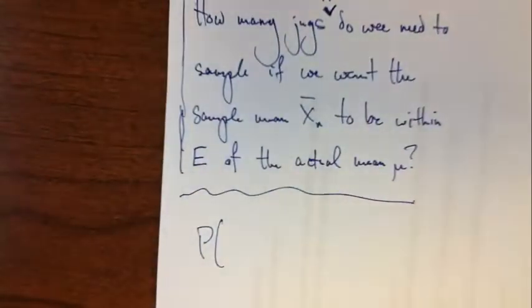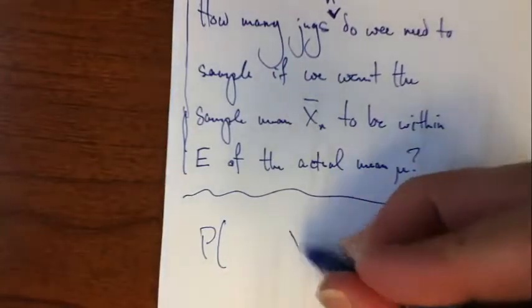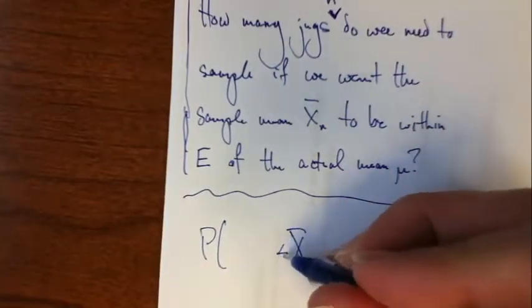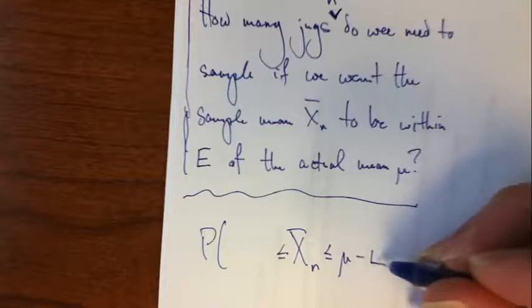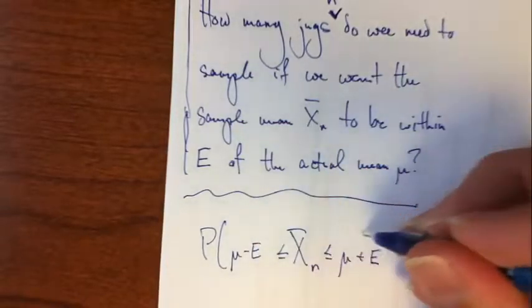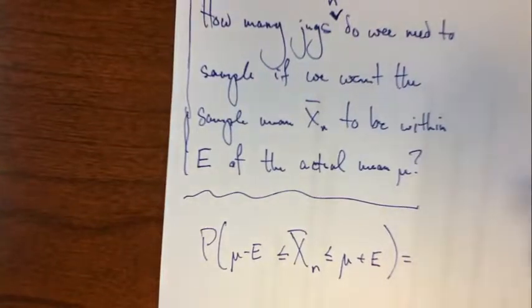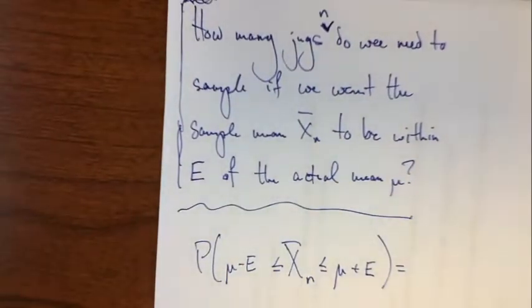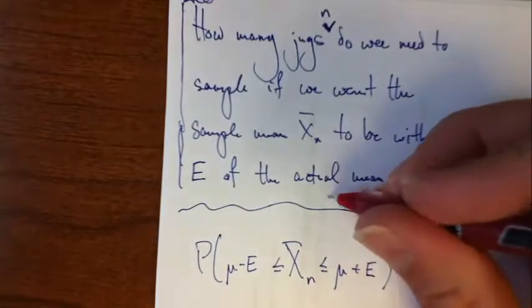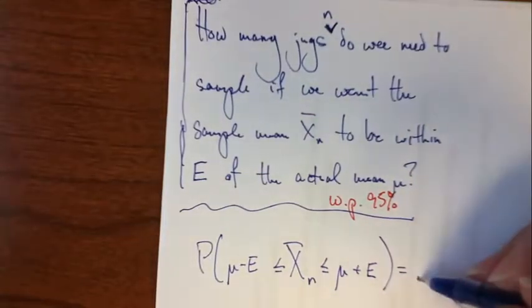I want to find the probability that x bar, our sample mean, is within e units of the actual mean. I want to set that equal to some probability actually. We want the sample mean to be within e units of the actual mean mu with a certain probability. There's no way to guarantee that, with probability 95%. So that's what we want, and basically I want to solve for n.